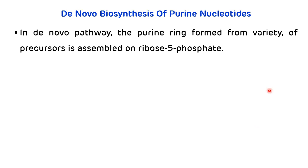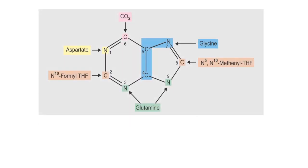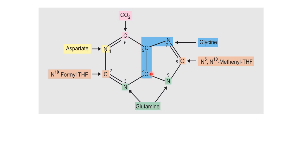In the de novo pathway, the purine ring is formed from a variety of precursors assembled on ribose 5-phosphate, which comes from the hexose monophosphate shunt pathway. The precursors contributing carbons and nitrogens to the purine ring are: glycine contributes C4, C5, and N7; aspartate contributes N1; glutamine contributes N3 and N9; N10-formyl-THF contributes C2; N5,N10-methylene-THF contributes C8; and carbon dioxide contributes C6.